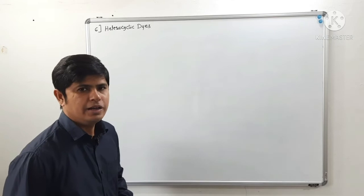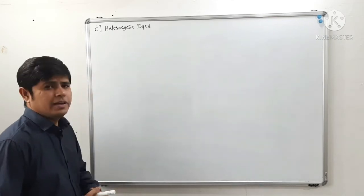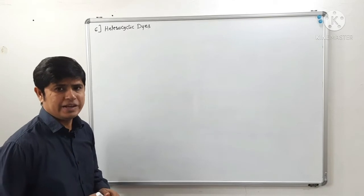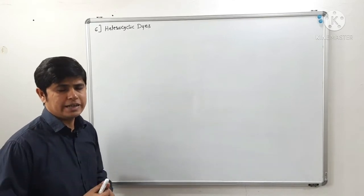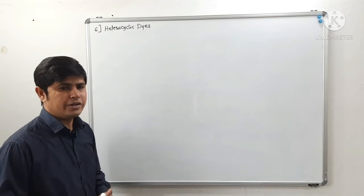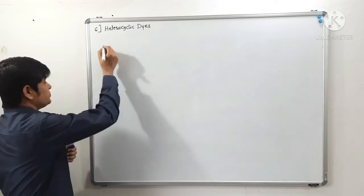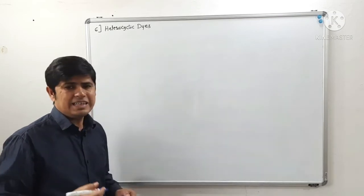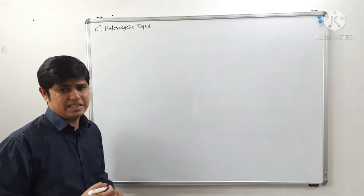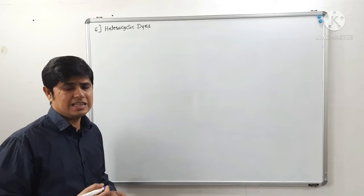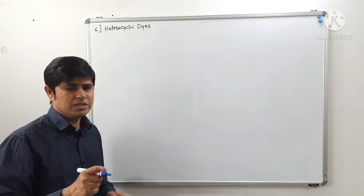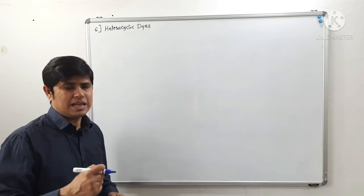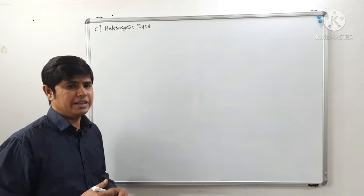Hello everyone, hello dear students. In this lecture we are going to continue heterocyclic dyes. In the last lecture we have seen two of the five heterocyclic dyes — thiazine dyes and azine dyes. The example from thiazine was methylene blue, and from azine was safranin T. We have also seen the synthesis of safranin T.